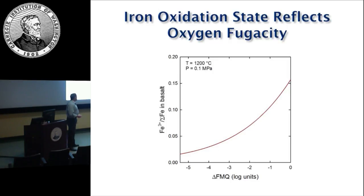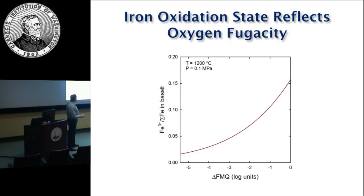Since it's hard to get direct information on the speciation of the fluid, what we can measure is the oxidation state of iron in basalts. It's been known for a long time that there's a correlation between the ferric over total iron ratio in basalt and the oxygen fugacity. At delta FMQ of -5 you've got about 1% of total iron as ferric, and as you oxidize, that goes up continuously. By the time you're at the fayalite-magnetite-quartz buffer, you've got about 15% of your total iron as ferric. So it's very sensitive and something we can measure.